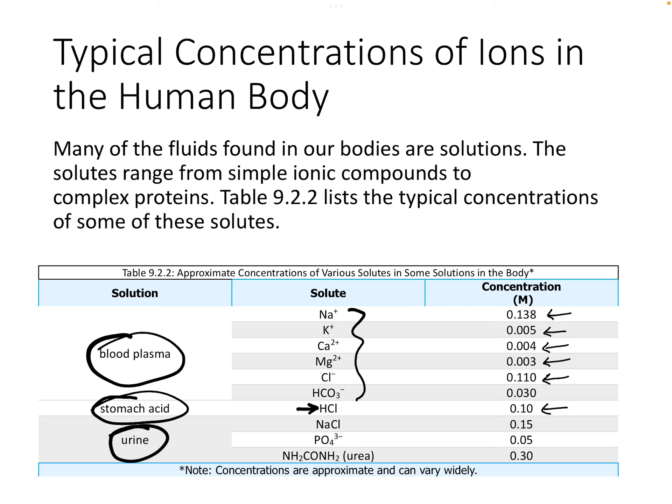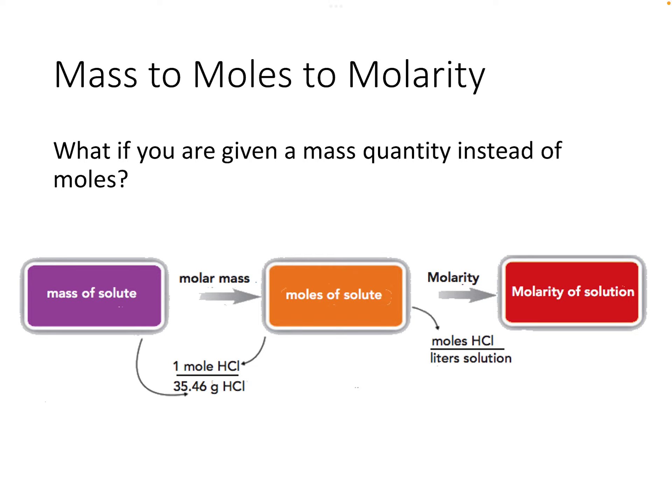In urine we have sodium, chloride, phosphate, and urea. These concentrations can change depending on what you eat or if you have a particular condition. When you go to the doctor and they draw blood, your results may be given in a slightly different set of units — you might not see molarity on your actual results.